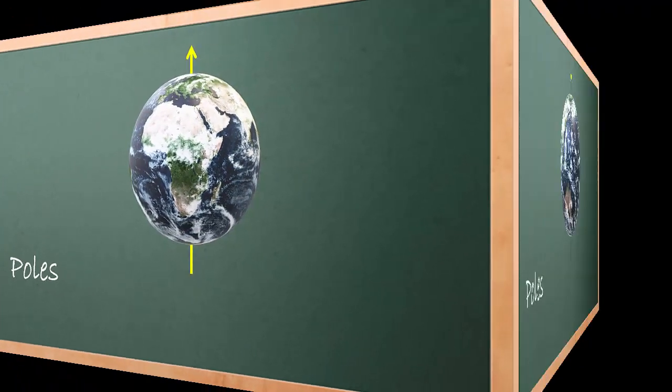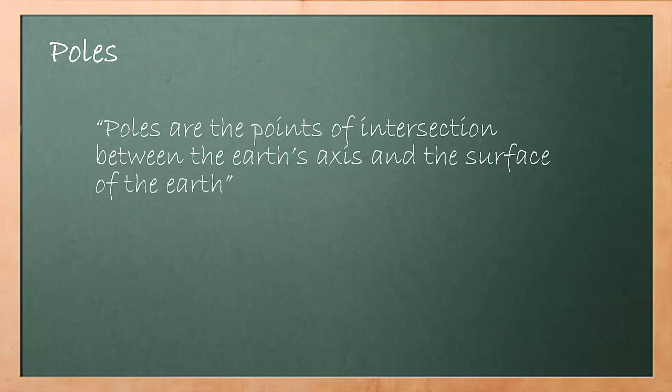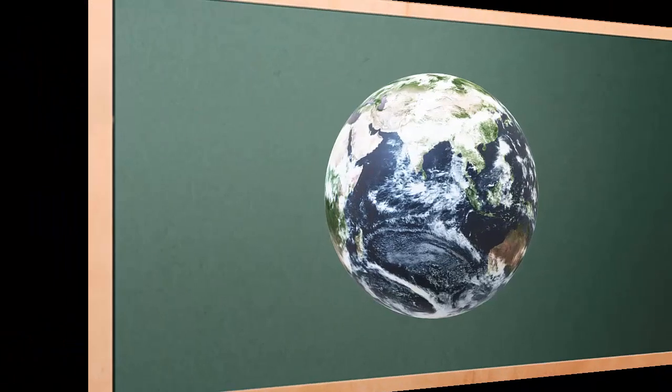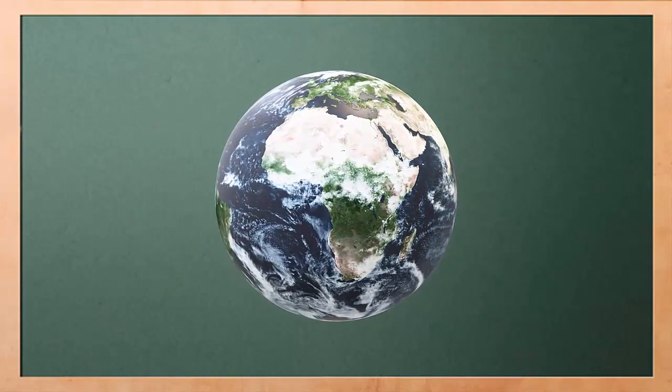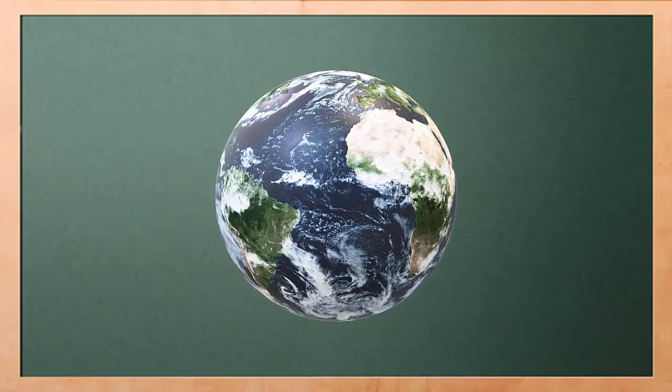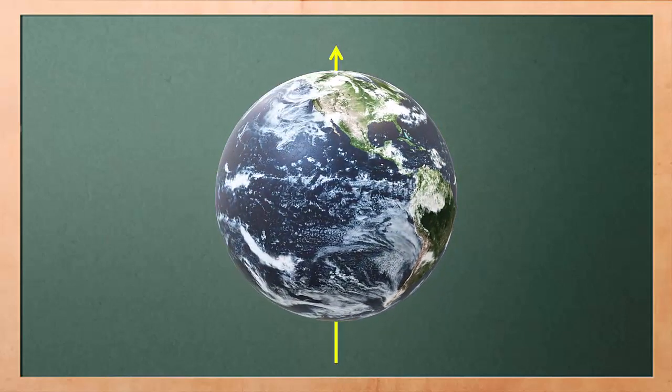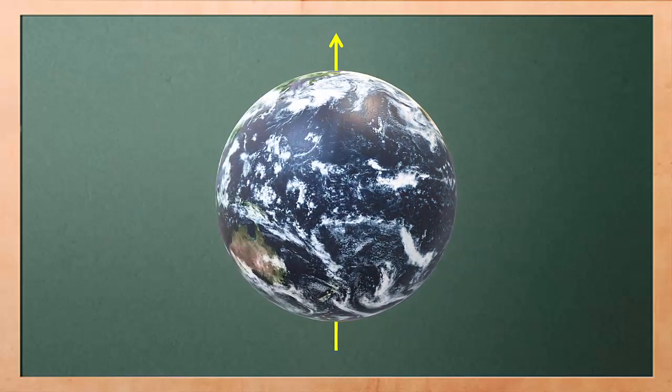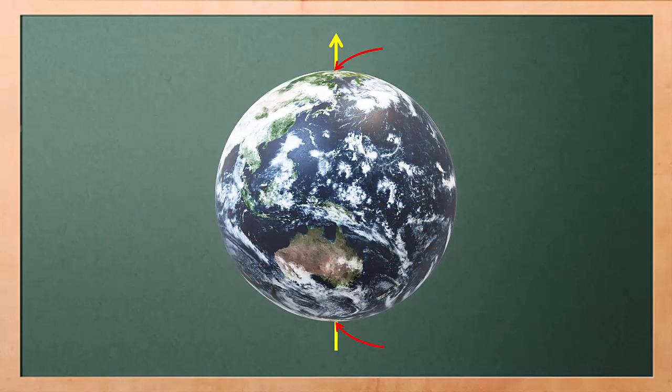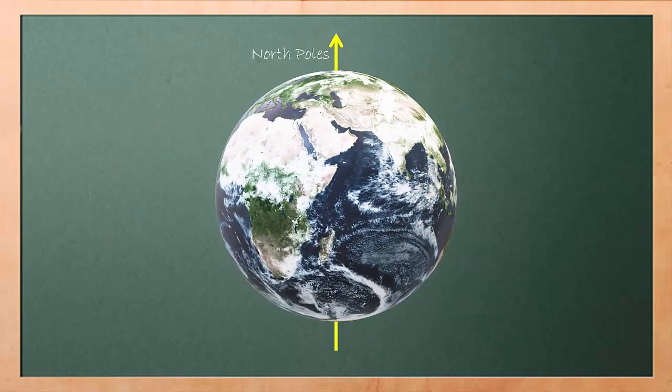Poles. Definition: Poles are the point of intersection between the earth axis and the surface of the earth. To illustrate the definition, here on the screen is the model of the earth. As you can see, the earth is rotating on its axis. If we mark this axis, in this case using the yellow line, the point where the axis intersects the surface of the earth is known as poles. On the top is known as north pole and the bottom one is known as south pole.